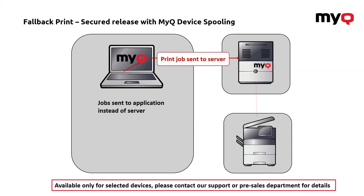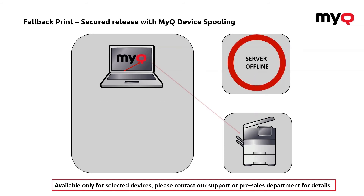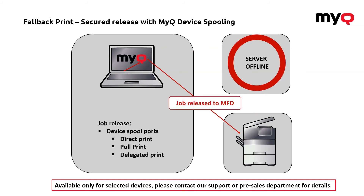This can be extended with MyQ device pooling — a feature explained in a separate video. The difference compared to the previous solution is that it can use device pool options for direct, pull, and delegate print, giving you full accounting. The limitation is that it's not available for all machines, so before deploying it at a customer site, check the documentation or contact support or pre-sales for details about supported machines.